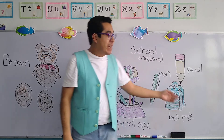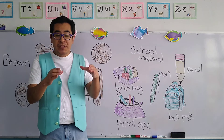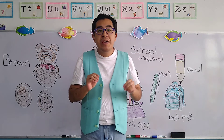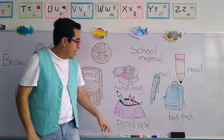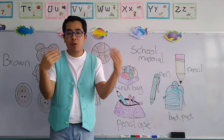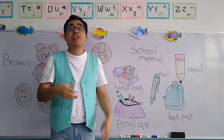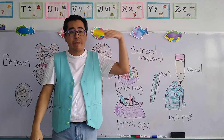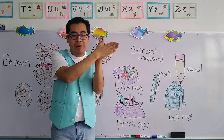Next we have the pencil case. The pencil case is a rectangular object in which we put the colors and the crayons. In Spanish we know it as estuchera. And remember, we have different colors for the pencil case, or sometimes we have pencil cases with our favorite cartoons — for example, pencil cases with the Marvel heroes or pencil cases with princesses stamped on them.